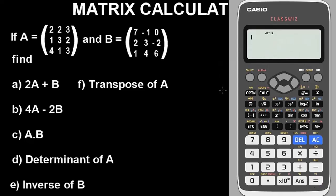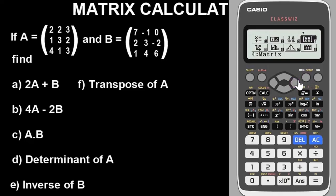The next thing you have to do is put the calculator in matrix mode. To do that, press Menu and select Matrix — use the arrow keys to navigate. Matrix is option 4, so press option 4. It will bring you to a screen asking you to define your matrix.